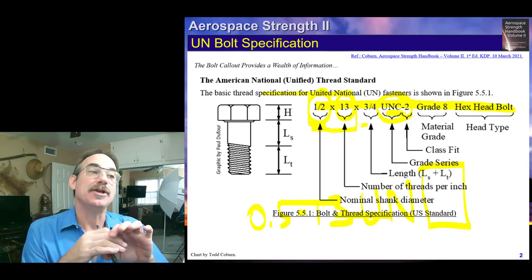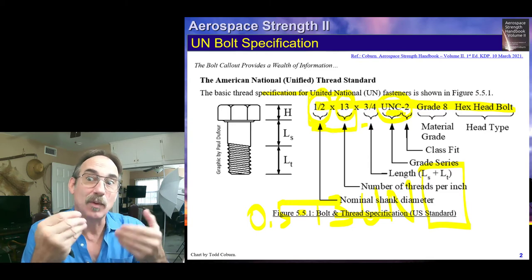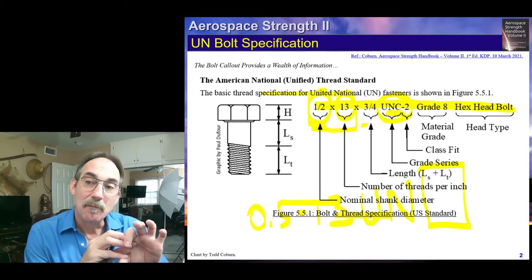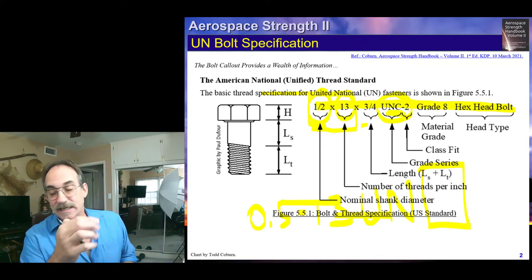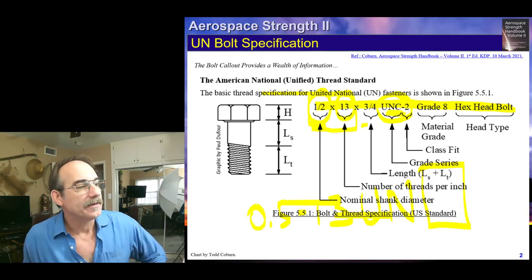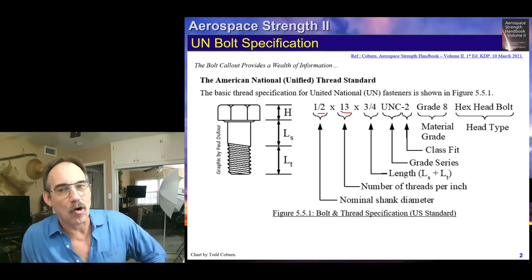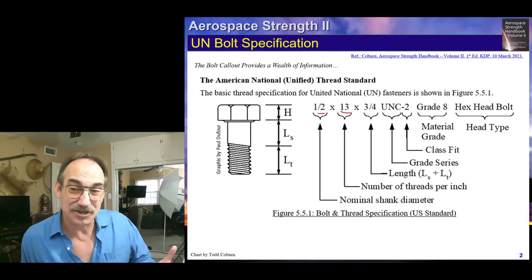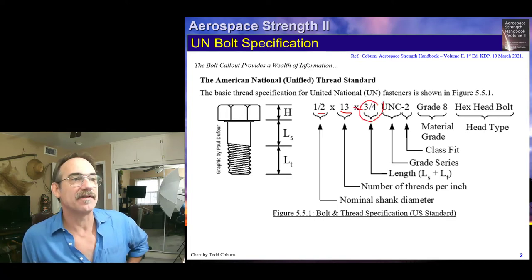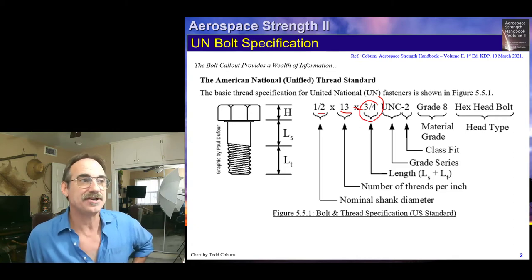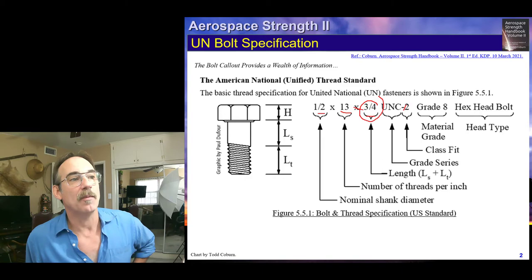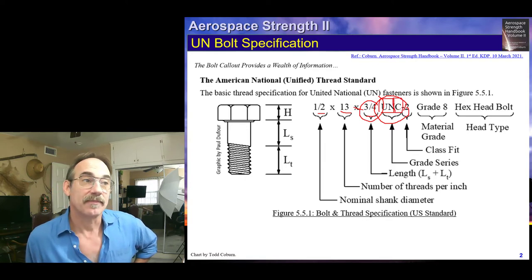In aerospace, we're going to tend to use the finer series of United National bolts when we see those kind of bolts, because they have better retention characteristics, but we can see any of these. The first call-out component is the diameter, then the threads per inch — typically written as one-half dash 13. Then there's another dash and the length of the bolt, though often this is left off. Then the standard UNC or UNF designation.